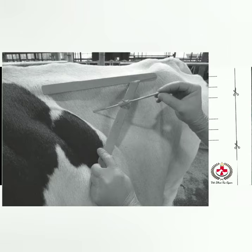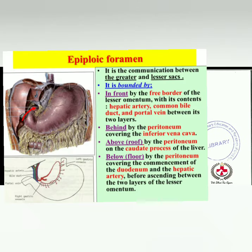Paralumbar fossa: a triangular depression on each side of ruminant animals between the last rib and the tuber coxae. The base of the fossa is formed by the transverse processes of lumbar vertebrae, and the apex is at the distal end of the last rib.